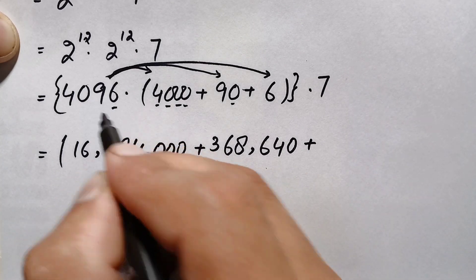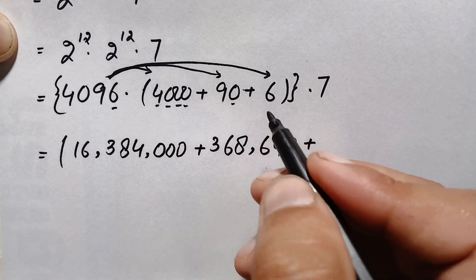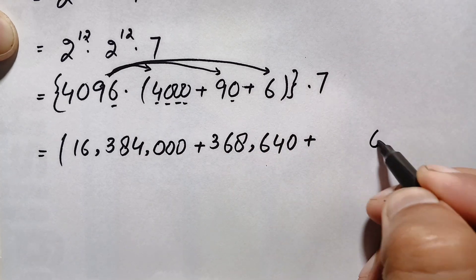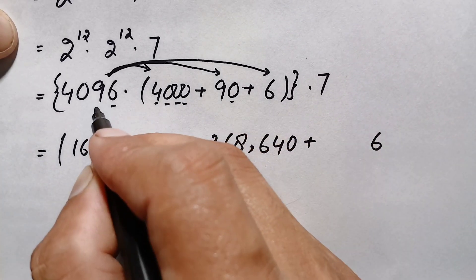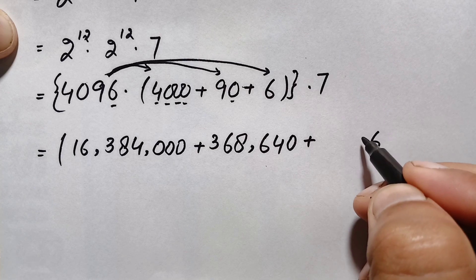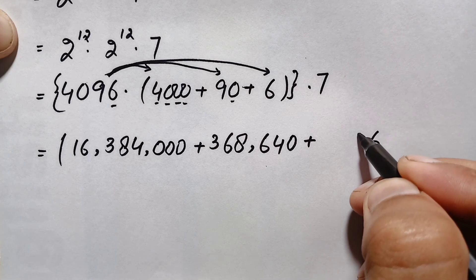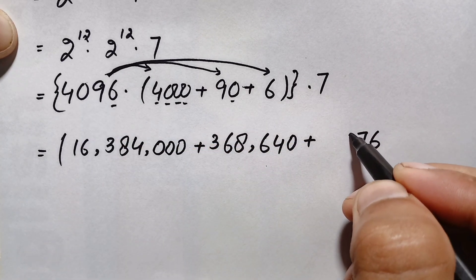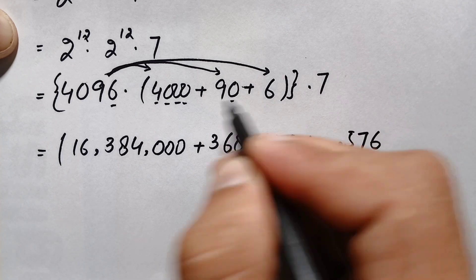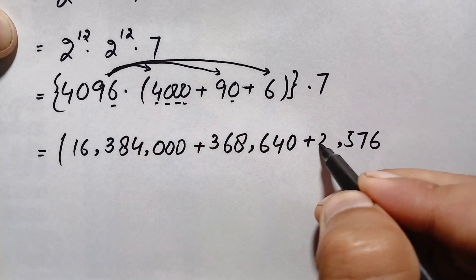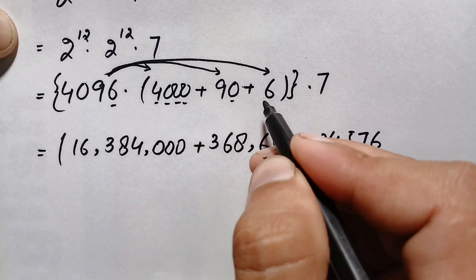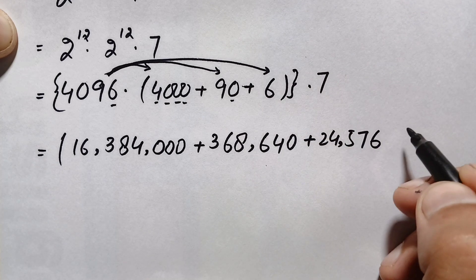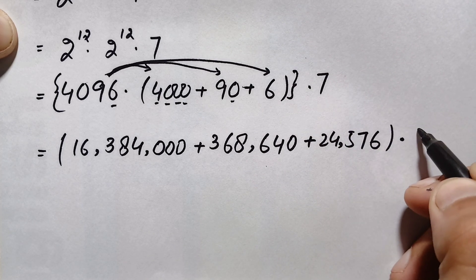Finally, multiplying 4096 by 6: 6 times 6 is 36 (write 6, carry 3); 6 times 9 is 54 plus 3 is 57 (write 7, carry 5); 6 times 0 plus 5 is 5; 6 times 4 is 24. This gives 24,576.